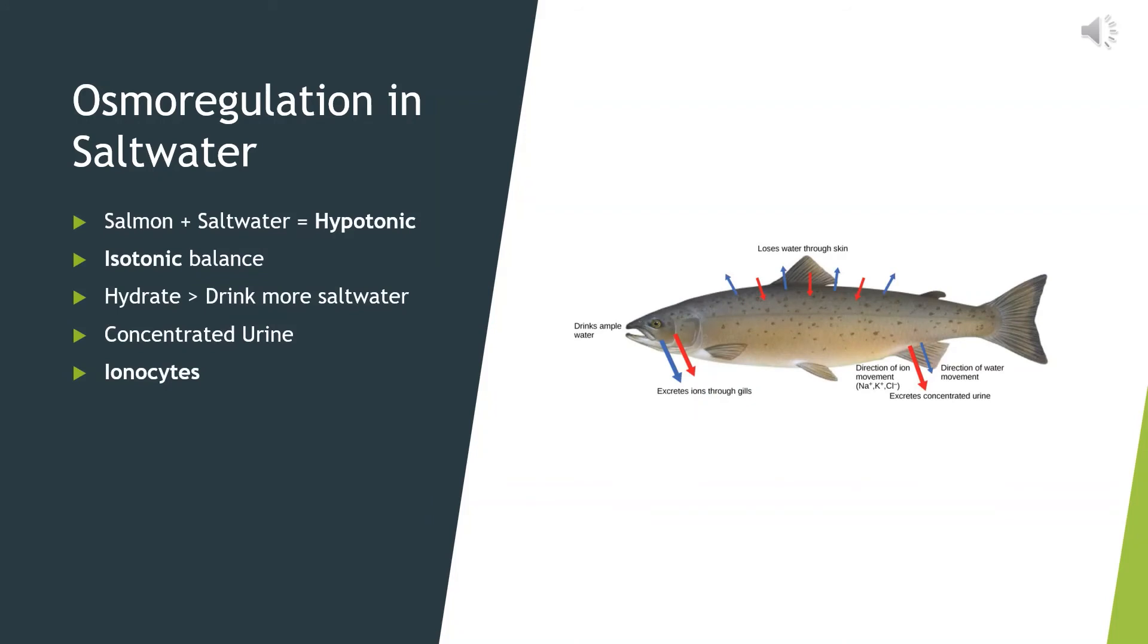Osmoregulation in saltwater. Whilst salmon are in saltwater, they are hypotonic to their surroundings, meaning their cells have a smaller solute concentration than their surroundings. Without this process, the water would leave the salmon's cell and the cell would shrink. This would damage the cell and it wouldn't be able to carry out normal functions.